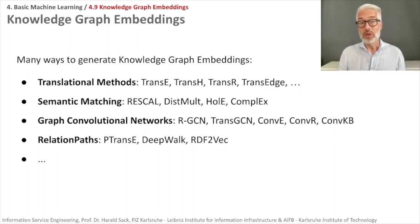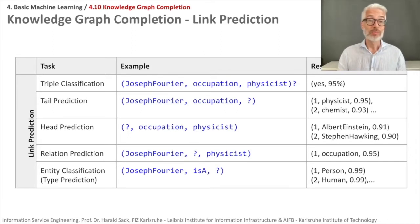This is the first slide to show you what kind of knowledge graph embeddings are popular right now. This is ongoing research, so there might be more possibilities next year. There are translational models, models based on semantic matching, graph convolutional networks, and relation paths dependent models. You don't have to keep this in memory. The last thing I want to point out is the downstream task with which you evaluate your model, called knowledge graph completion.